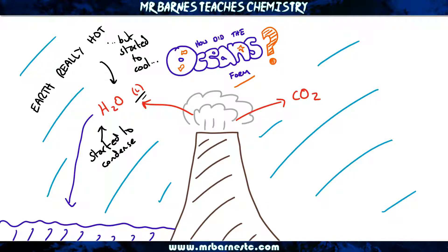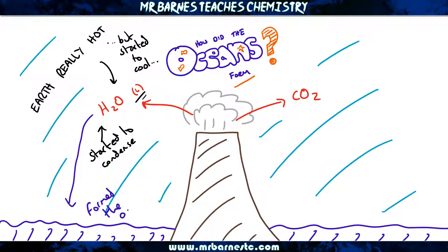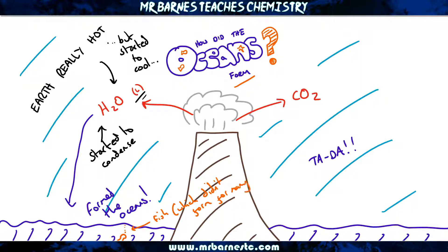When it condensed and turned into a liquid, there was so much of it that it actually formed our oceans. In summary: the Earth cooled, the water vapor condensed, and it formed our oceans.